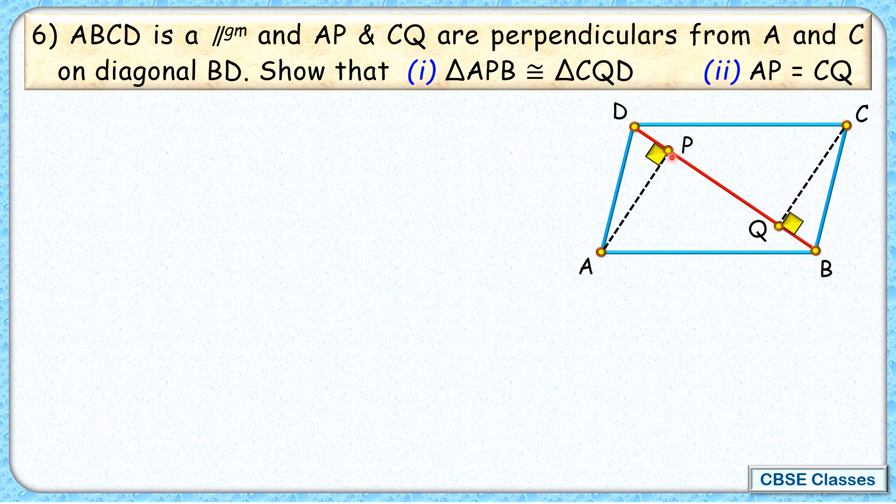That is, this yellow triangle and this pink triangle are congruent to each other. Also, we have to prove this perpendicular length AP and CQ are equal to each other. Let's check the solution.